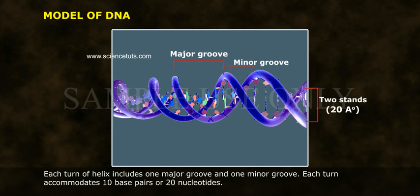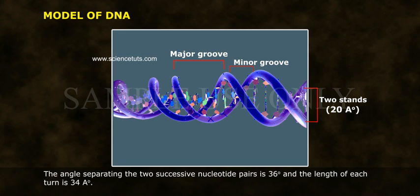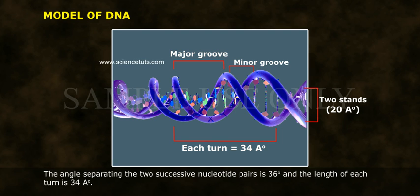Each turn accommodates 10 base pairs or 20 nucleotides. The angle separating two successive nucleotide pairs is 36 degrees, and the length of each turn is 34 angstroms.